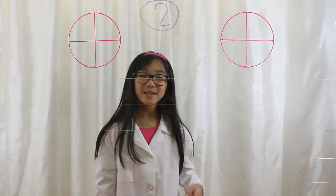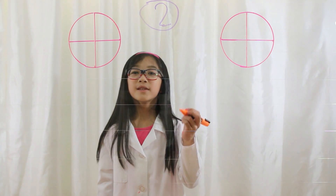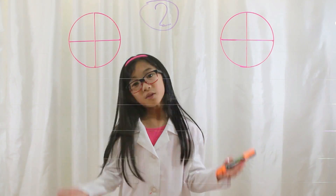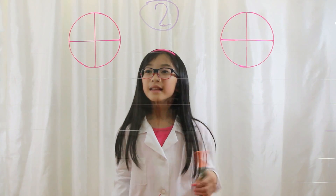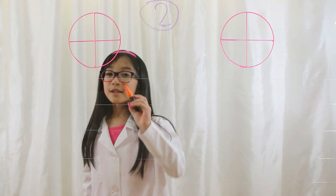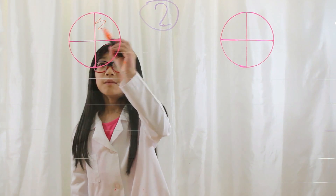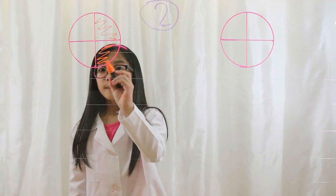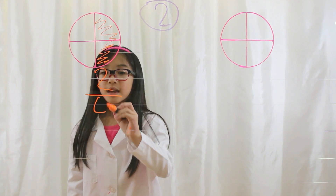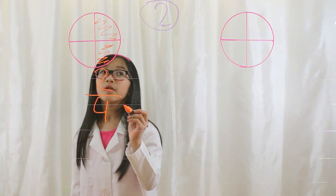I'm going to show you type two. Type two is where the denominators are the same, but the numerators are different. Let me give you an example. Let's say Mary wants a birthday party and she ate two pieces. That'd be two-fourths, because there are two pieces colored and there are four pieces total.